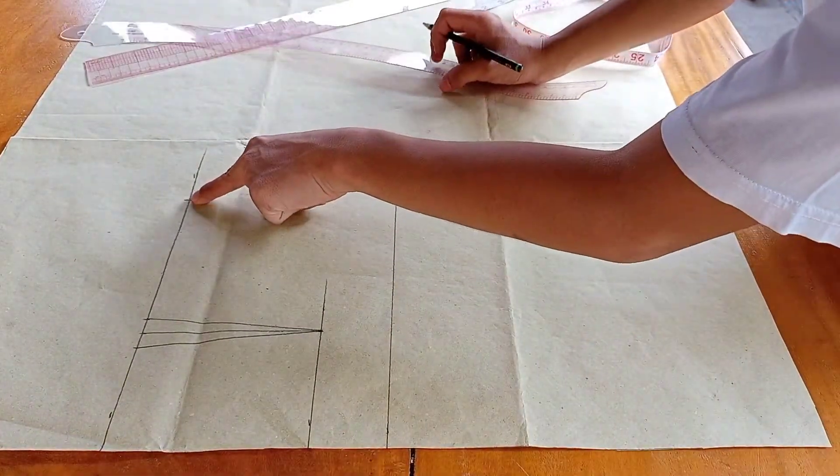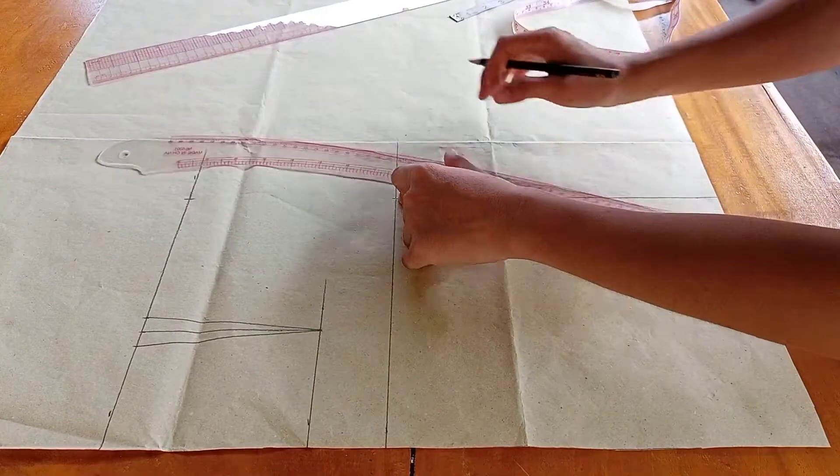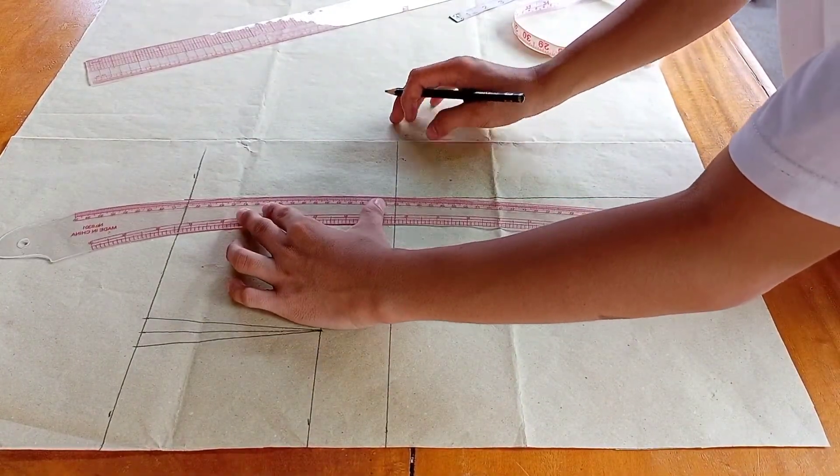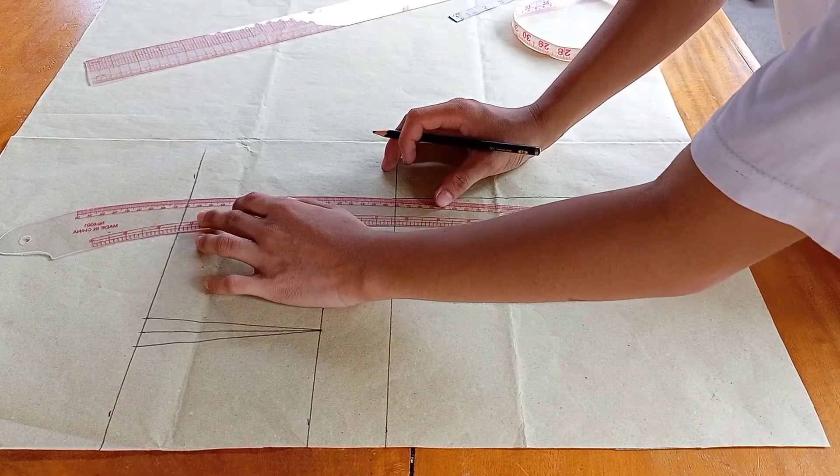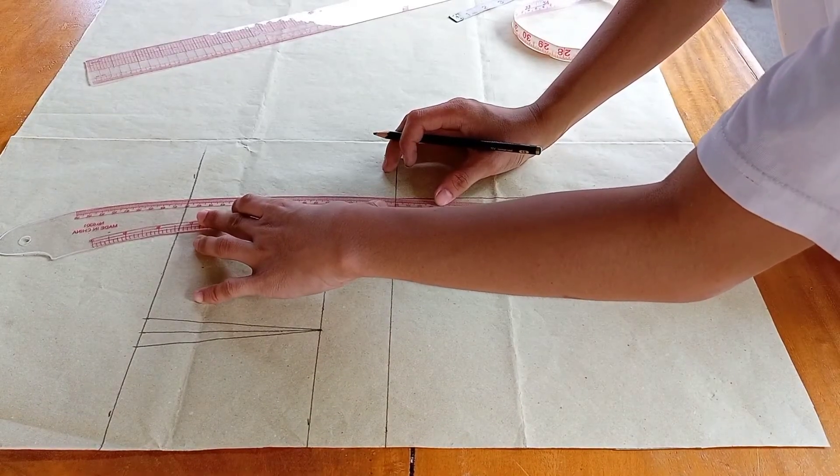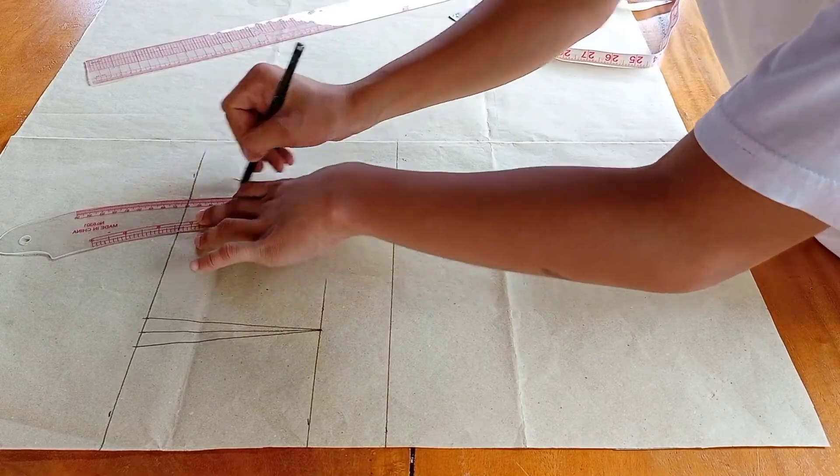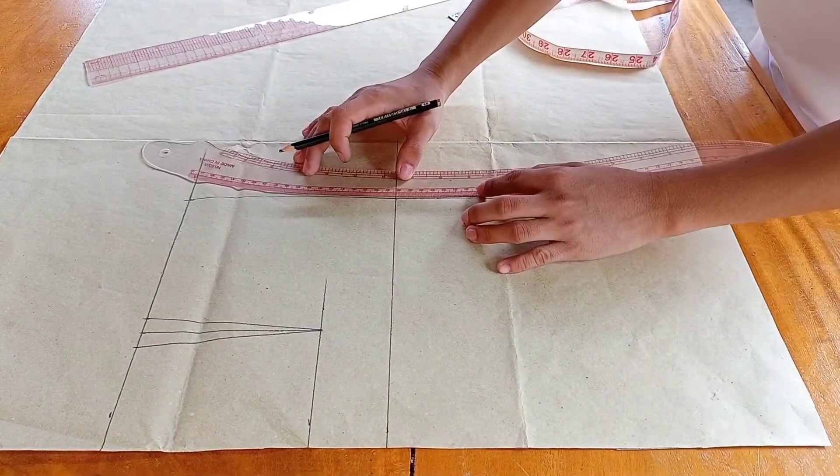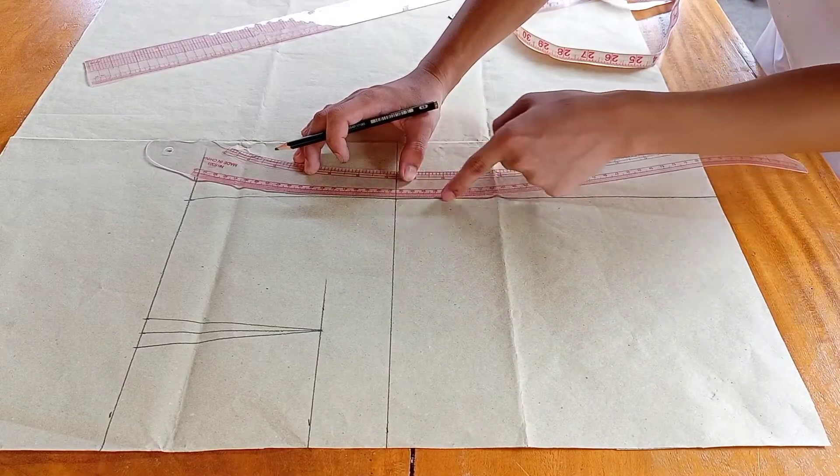From this point, connect here with a hip curve. This is optional. You may smoothen the curve here.